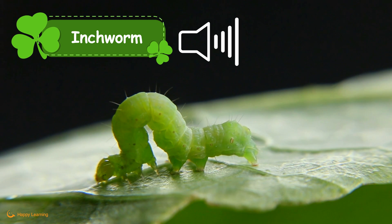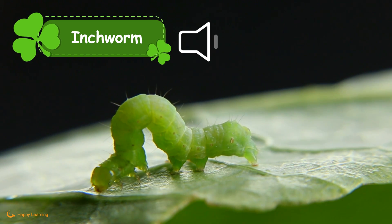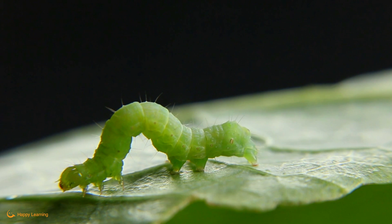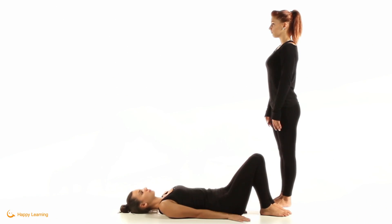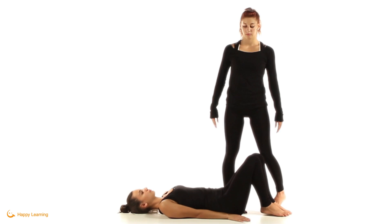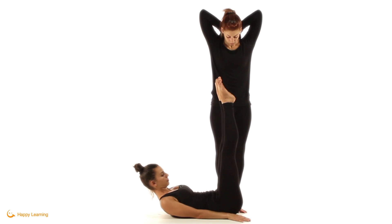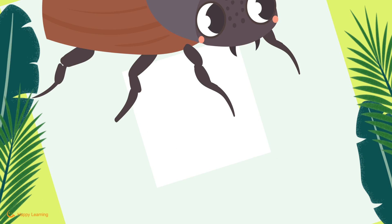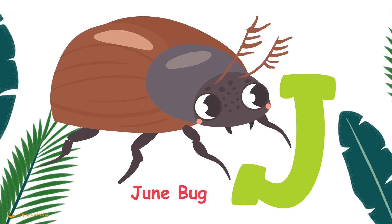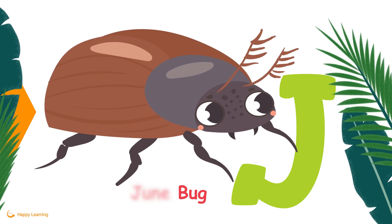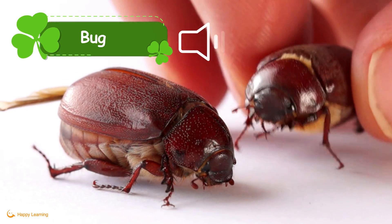I is for Inchworm. Inchworm. J. J is for Junebug.